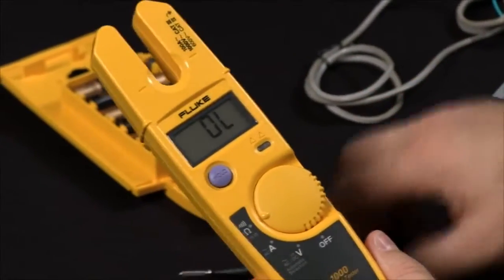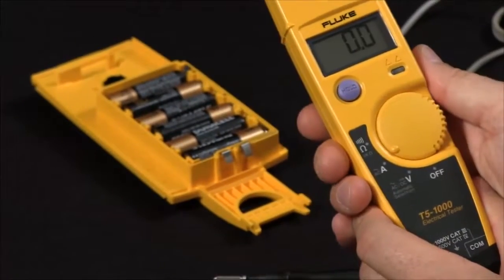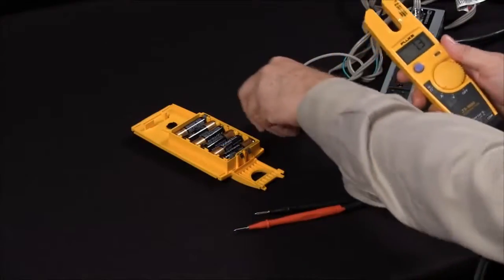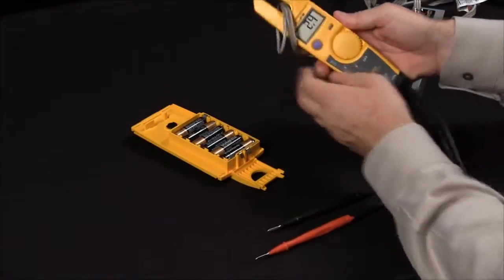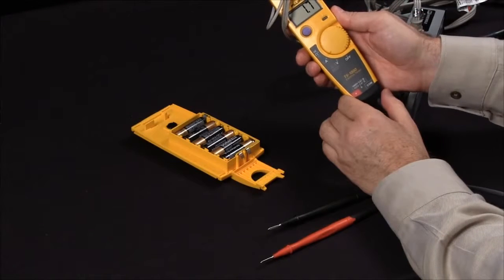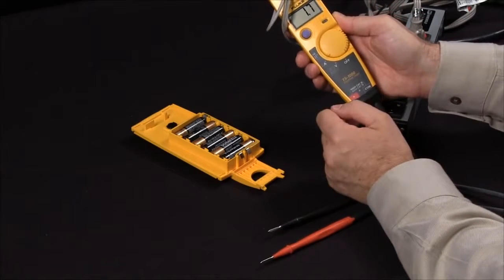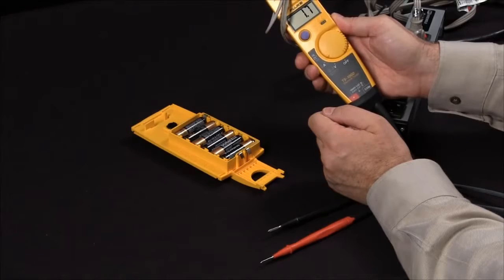To take a current measurement, simply move the dial position to measure current, and now you can slide your open jaw design around your current source, and right there we're reading 1.7 amps AC.